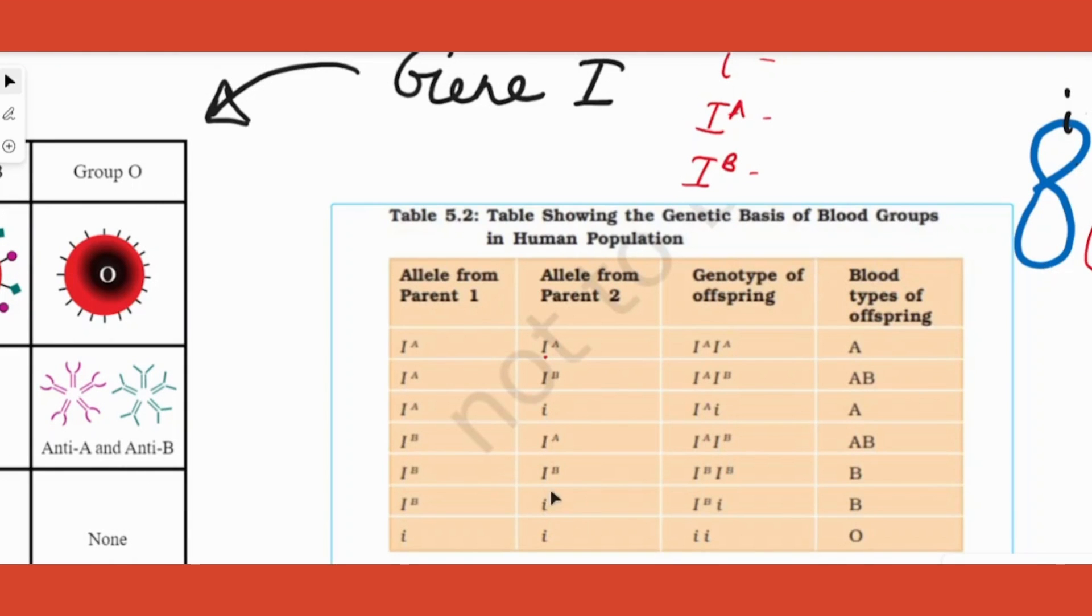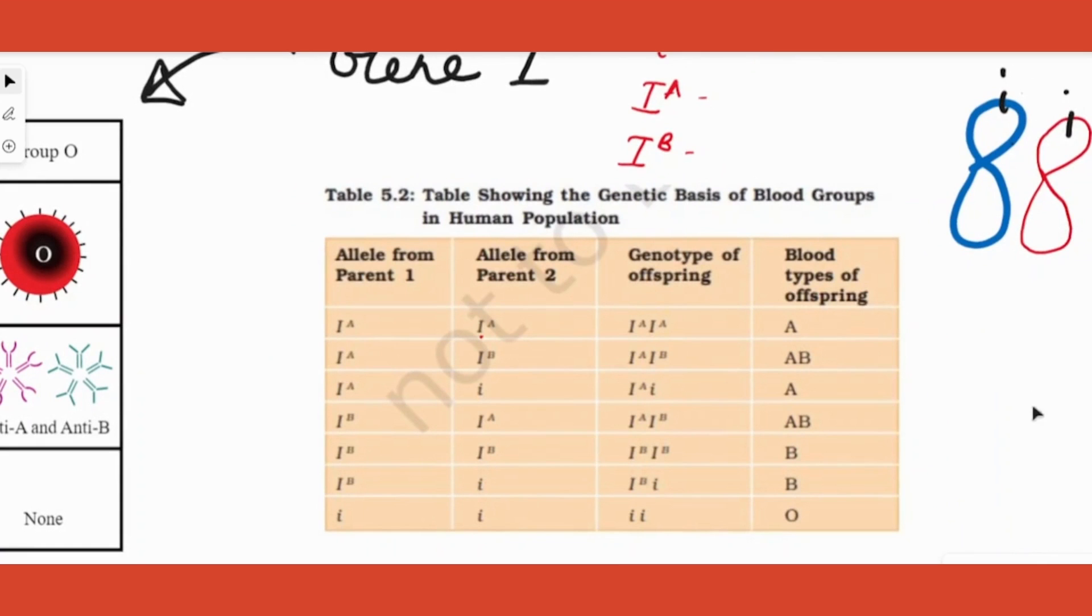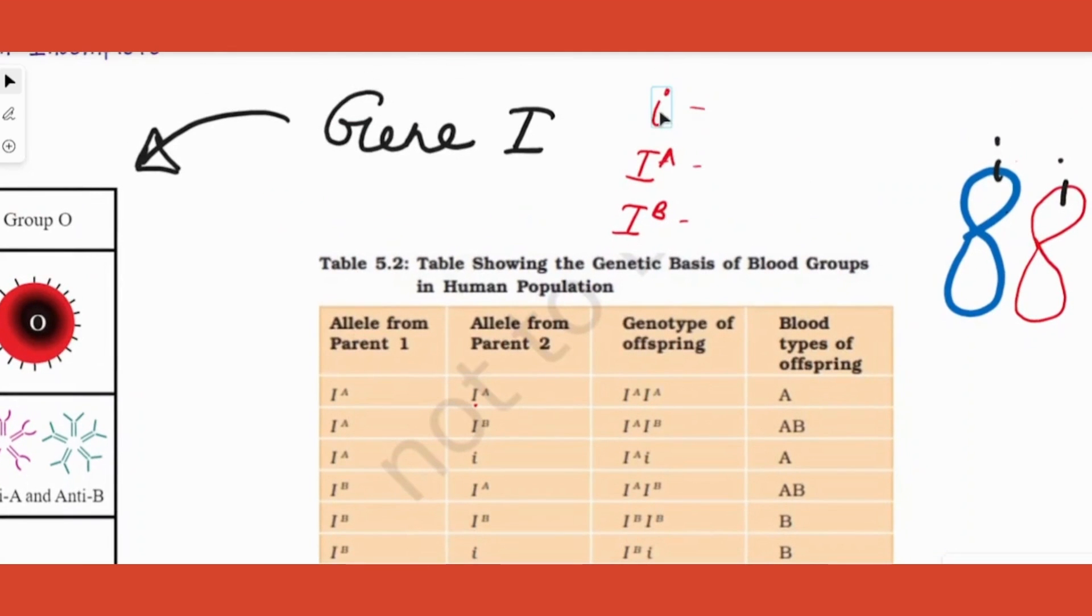Let's take another example: IB present on one chromosome, IA present on another chromosome, then my blood group is AB because this is going to produce the B antigen, this is going to produce A antigen. So both antigens are going to be present, resulting in the AB blood group, and so on. I hope this much is clear.